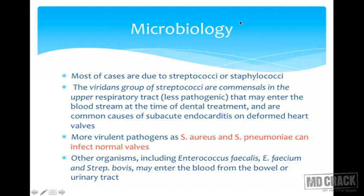Regarding microbiology, most cases are due to streptococci or staphylococci. The viridans group of streptococci are common commensals in the upper respiratory tract; they are less pathogenic and may enter the bloodstream at the time of dental treatment, making them common causes of subacute endocarditis on deformed heart valves.